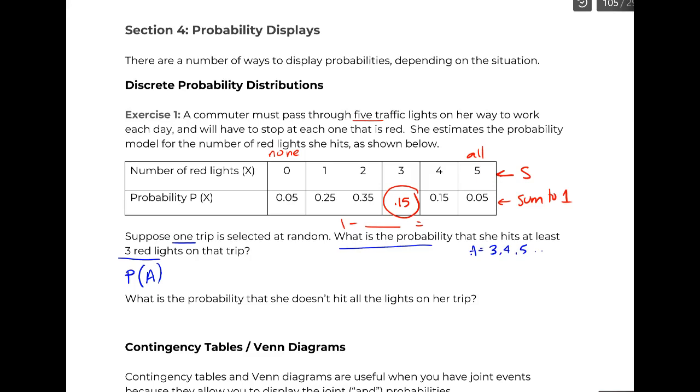And then we have to realize these are all disjoint because she can't hit 3 and 4 lights in that same trip. She can only hit 3 or 4. So we're just going to add all of these things that fall into at least 3 together. More likely, though, we don't use the A notation when we're talking about discrete probability distributions. And again, we'll see this in part 5. So for now, it's just a bit of a detail. We have the probability, and we'd use X to equal the number of red lights because that's what it has here. And we'd say it's greater than or equal to 3. And then again, this is 3, 4, and 5. So this would be 0.15, 0.15, 0.05, 0.35.